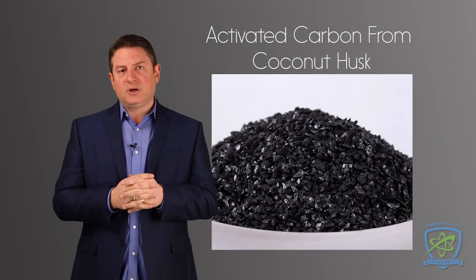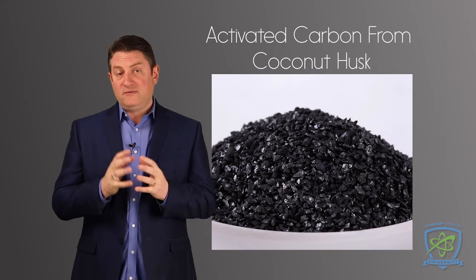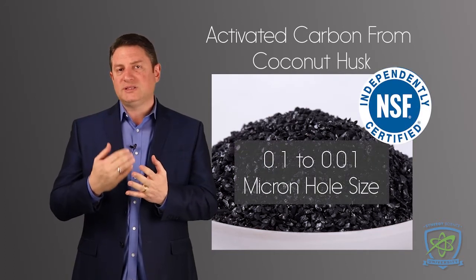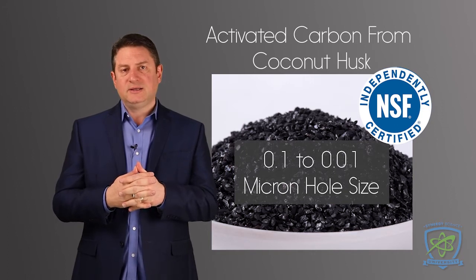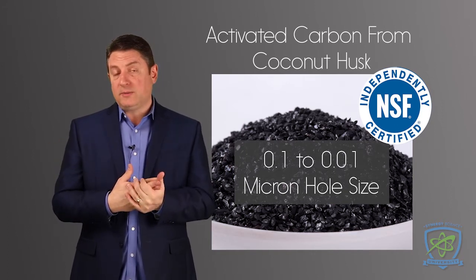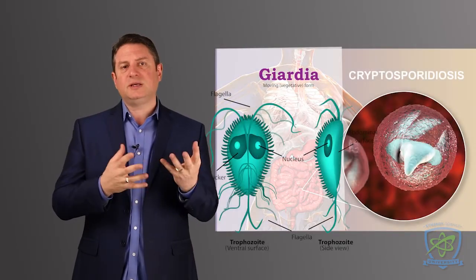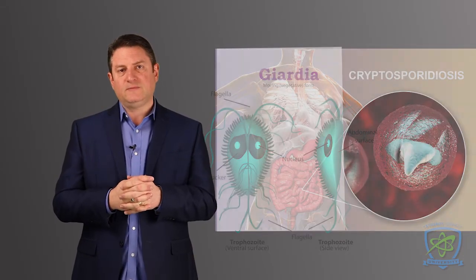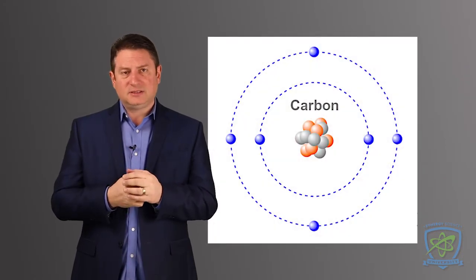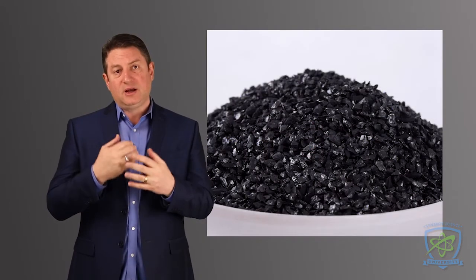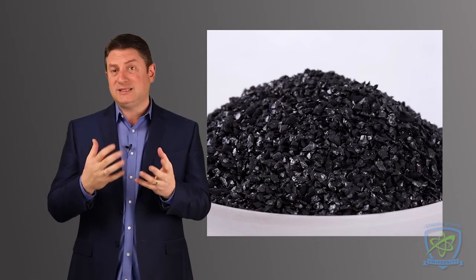The next stage is activated carbon from coconut husk. We use a specific brand of carbon from coconut husk that is also NSF certified and has a 0.1 to 0.01 micron pore size. So it traps 0.01 micron or larger particles. This is important because cryptosporidium, giardia, these kinds of things will be stopped in the filter.